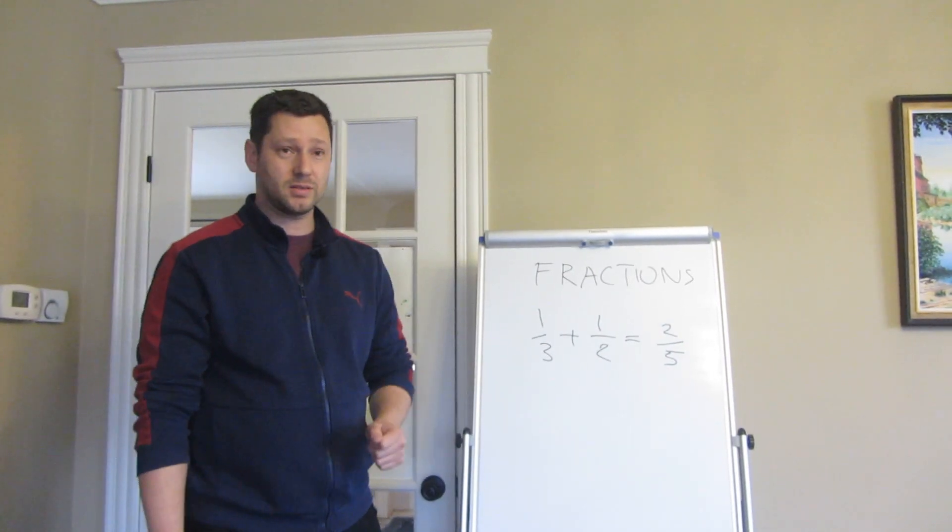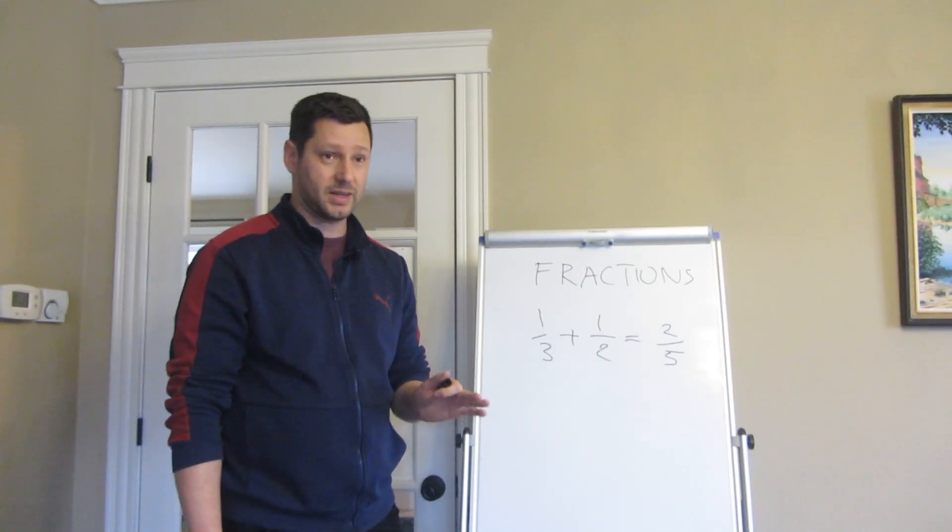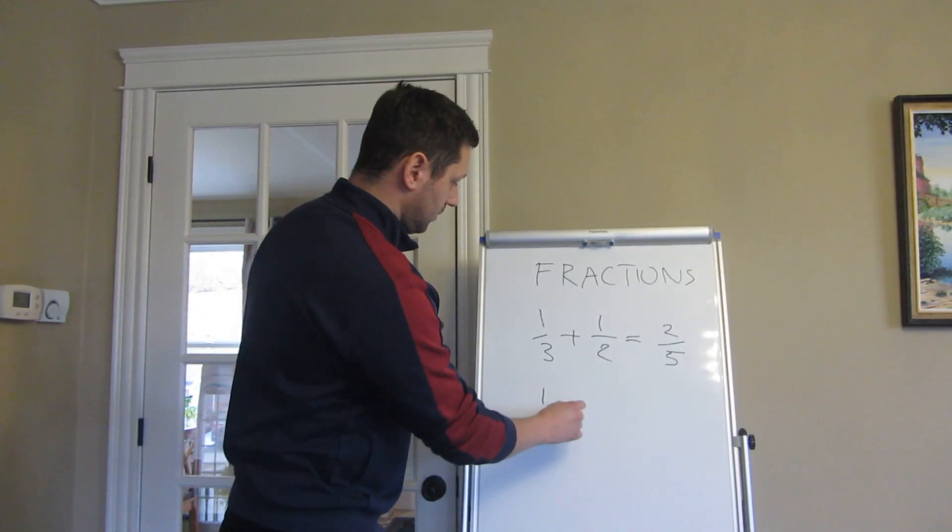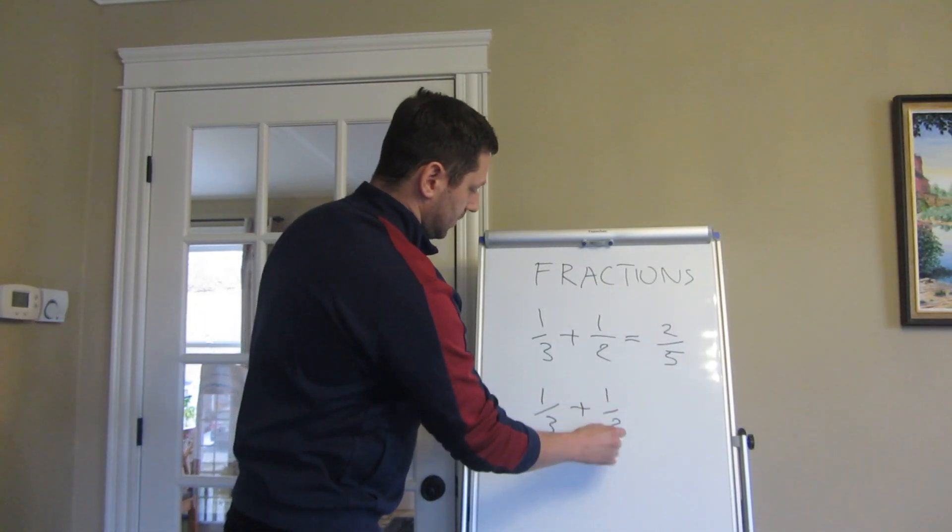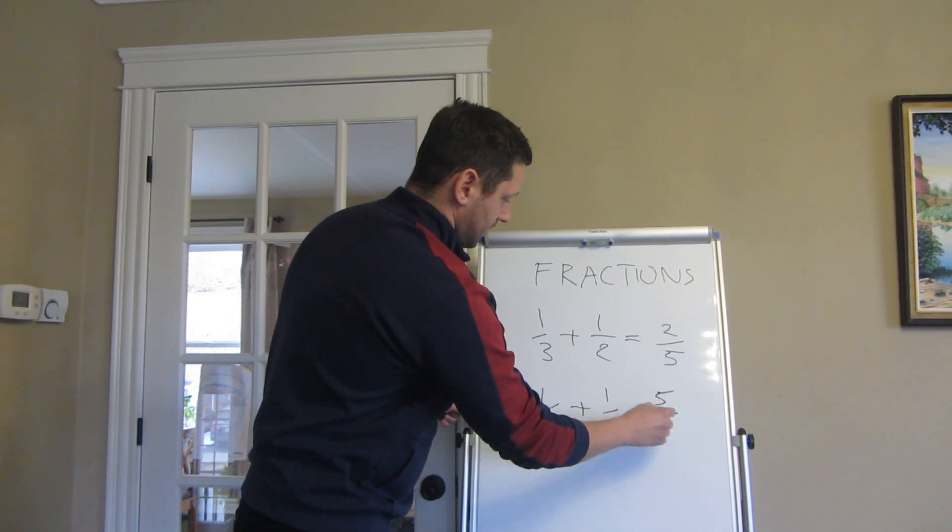So if you got the same answer, the following will be an introduction into fractions where we will visualize them for better understanding. The proper answer is this one: it's one third plus half equals five sixths.